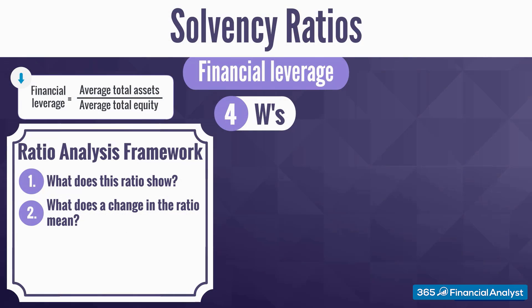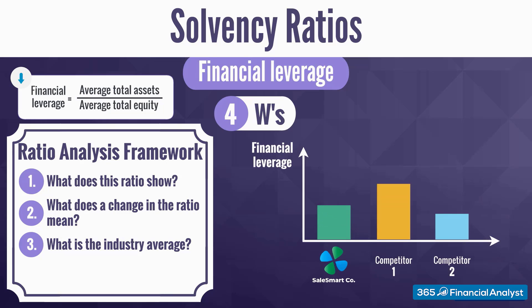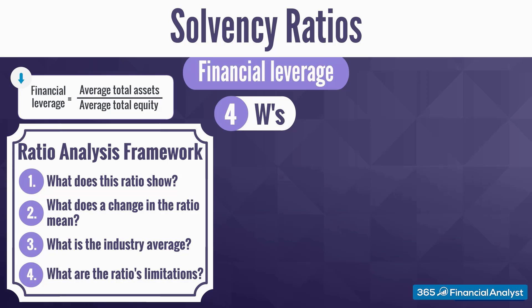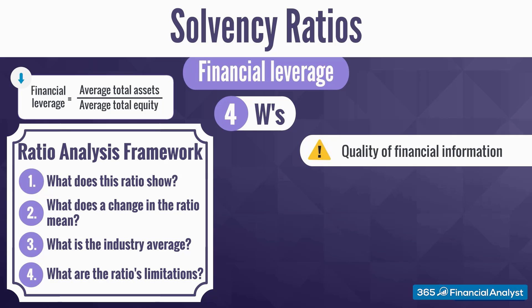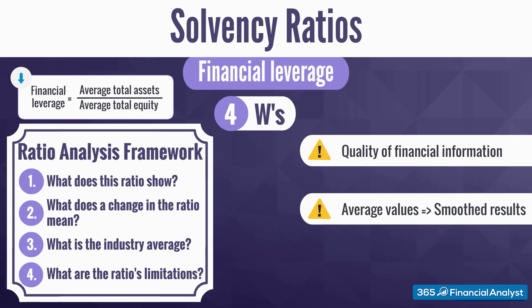We can continue our analysis by asking: what's the norm? To answer this, you will need to find the average financial leverage ratios of competing companies and compare them to SalesSmart's indicators. Of course, the ratio has limitations — it is only as good as the quality of the published financial statements and presumes that total assets are measured reliably. If figures happen to be somewhat sugar-coated, this will inevitably affect the data. A savvy financial analyst would always double-check management's assumptions and valuation bases first. Besides, since the ratio works with average values, if either total assets or total equity changes significantly from year to year, it may be a good idea to perform more in-depth analysis.